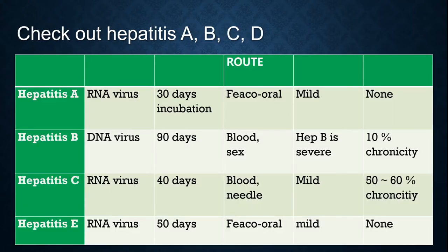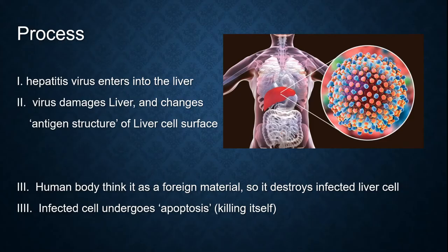As you can see, hepatitis B is a DNA virus, with a 90-day incubation period through blood contact, and it is severe with 10% chronicity. All other hepatitis viruses are RNA viruses. Hepatitis C is transmitted through needles and shows 50 to 60% chronicity, but it is less severe than hepatitis B. The process: the hepatitis virus enters the liver, damages liver cells and changes the antigen structure of the liver cell surface, the body thinks it has foreign material and destroys the infected liver cells.